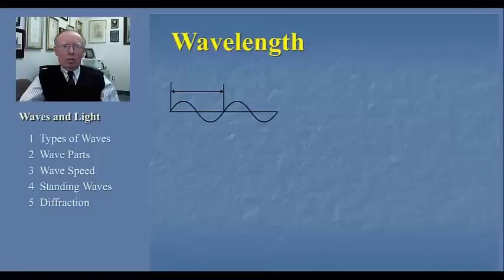This is the distance between repeated points in the wave sequence. The diagram you see here shows the wavelength of a transverse wave. Once we complete one wavelength, the pattern repeats itself exactly. We could begin our measurement of the wavelength at any point on the wave. We just have to measure the distance to the next identical point in the series.